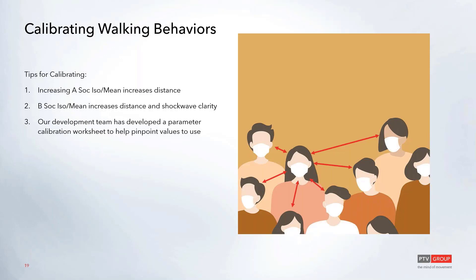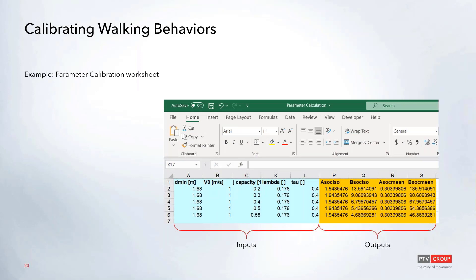Talking with our development team over the last few weeks about how can we help calibrate these walking behaviors, in our experience, calibrating these walking behaviors can be a lot of trial and error. So you do a little tweak and then you see how the simulation runs. However, talking with our development team, we've come up with this calibration worksheet where you can kind of throw in some default values that you want.